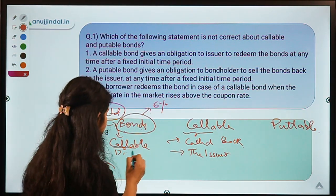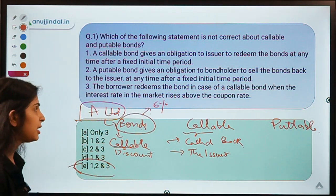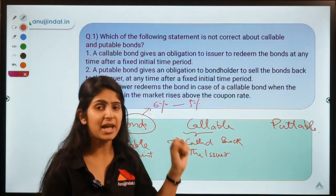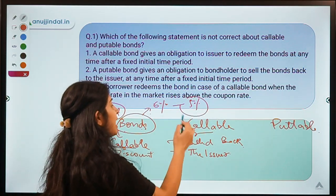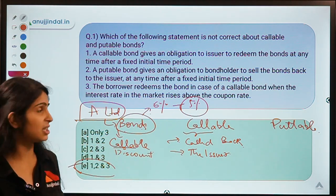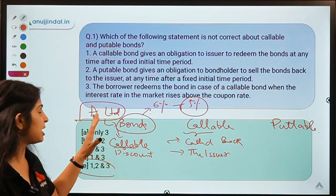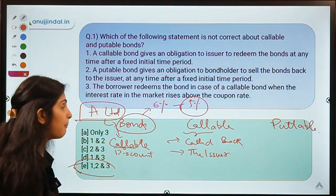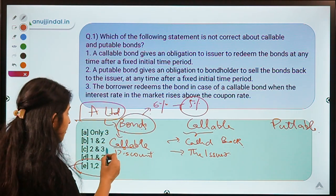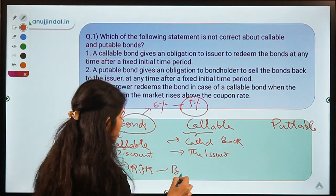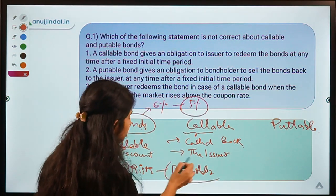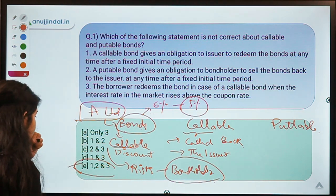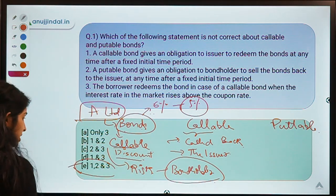For example, if a company A Limited is providing a 6% coupon rate and market rates fall to 5%, A Limited can call back the bonds and issue new bonds at 5%, saving on interest cost. However, this creates reinvestment risk for the bond holder, who may not find another investment offering 6% since rates have fallen. That is why callable bonds are available at a discount.